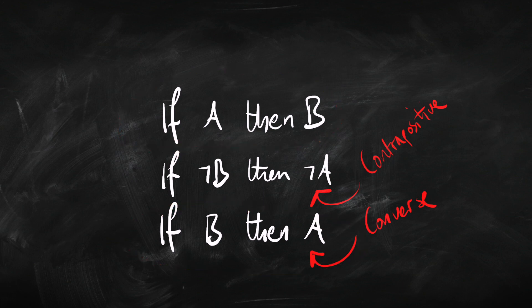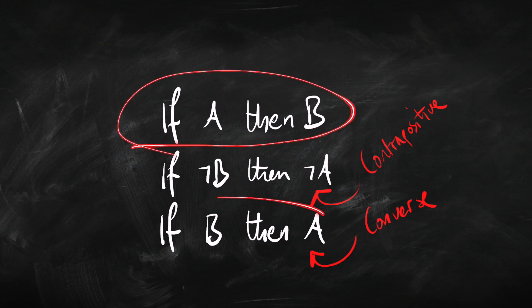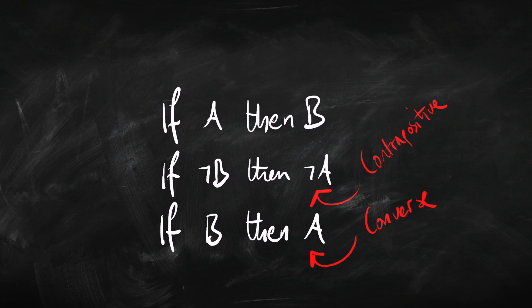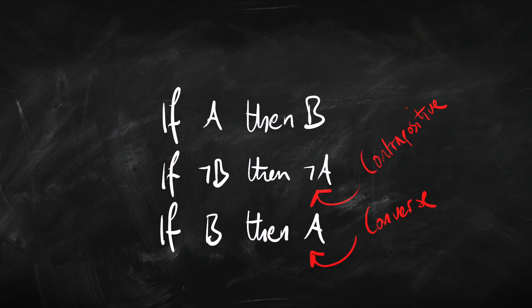The converse of a conditional isn't going to be equivalent to it — 'if A then B' means something very different from 'if B then A'. But a statement and its contrapositive always have the same truth conditions; they're equivalent. In truth-functional logic, think about the truth table: 'if A then B' rules out A being true and B being false, and the contrapositive rules out B being false and A being true — so they have the same truth table and are equivalent.